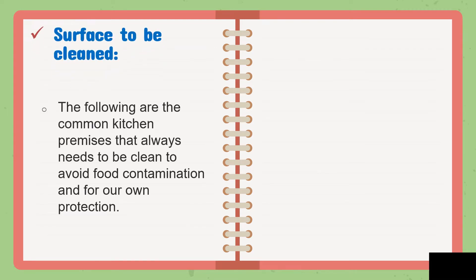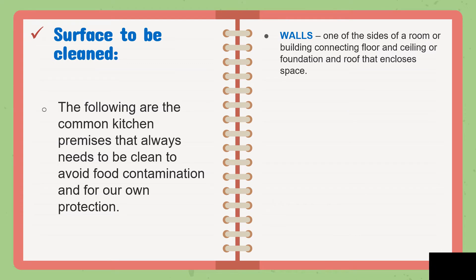Let's move on to the surfaces to be cleaned. The following are common kitchen premises that always need to be cleaned to avoid food contamination and for our own protection. Kitchen premises are the parts of every kitchen — like the sink, the area beside the sink, the floor, and the walls. These are all called kitchen premises. First on the list: walls — one of the sides of a room or building connecting floor and ceiling that encloses space. We clean the walls because microorganisms and pests like cockroaches and rats can pass through them.